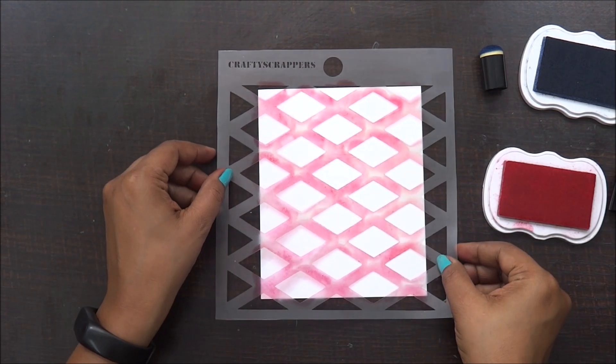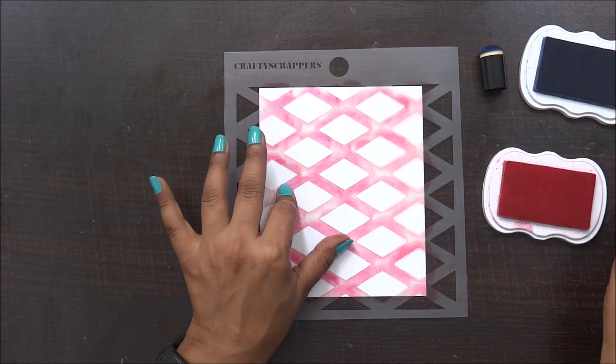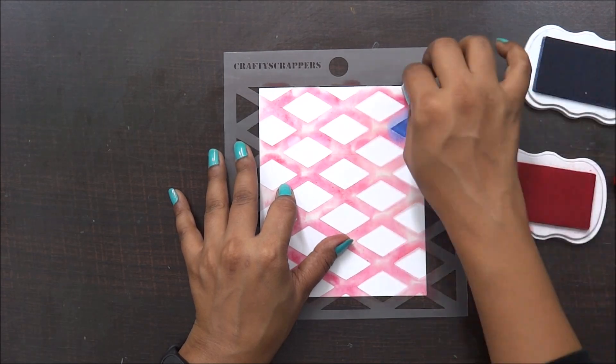For my third pattern, I'm going to use both my stencils. So first on my white cardstock, I'm using the triangular pattern and I'm going to use my blue color shade for this.